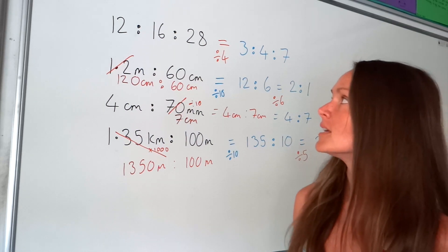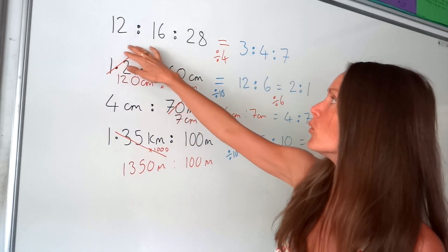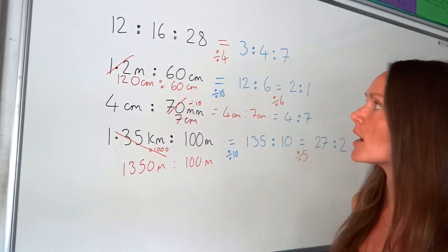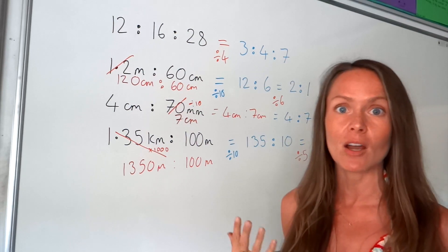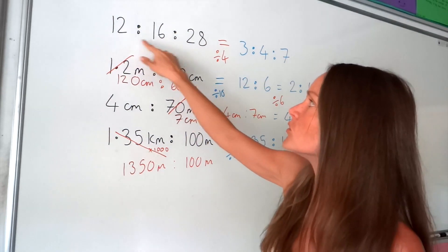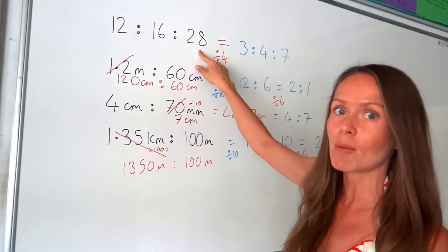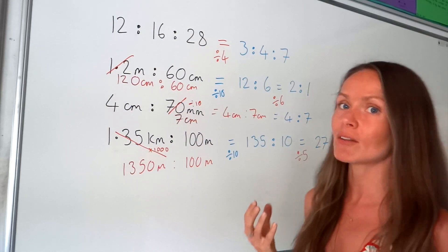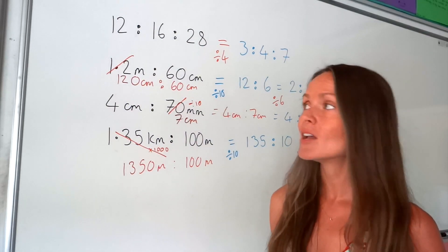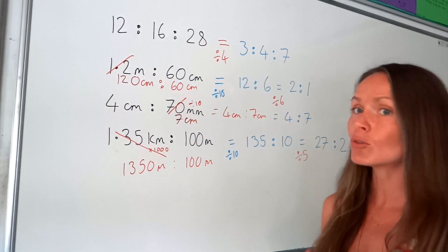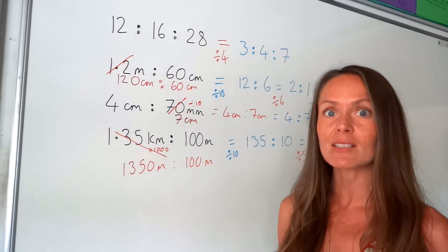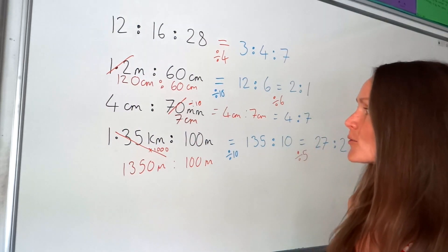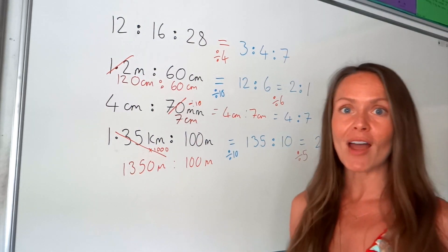So remember: if you get more than two numbers, it's exactly the same method — just divide all of them by a common factor that is common to all numbers. And if you get a ratio with different units, make sure they're all in the same units before you simplify. So there you go — simplifying ratios.